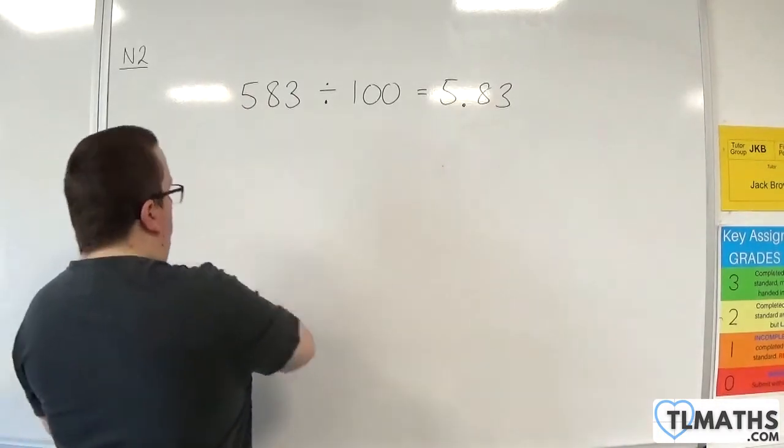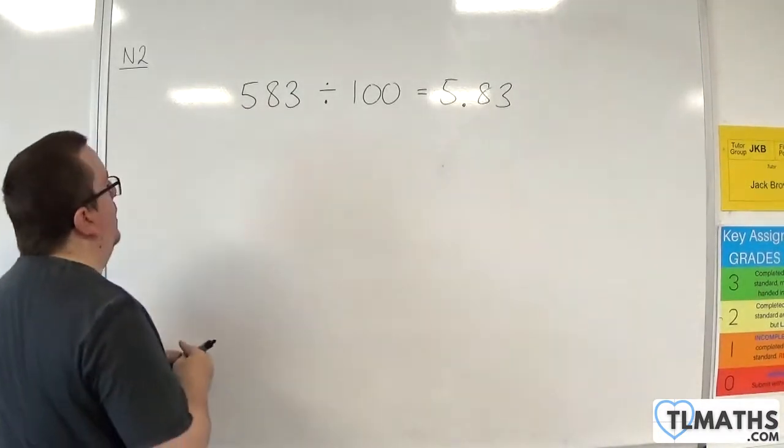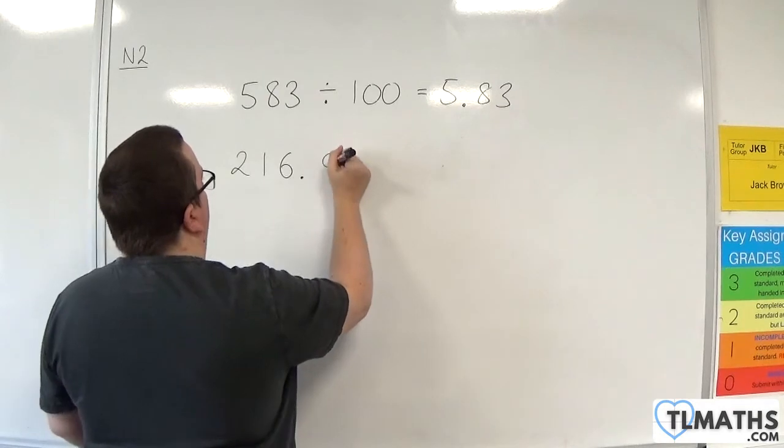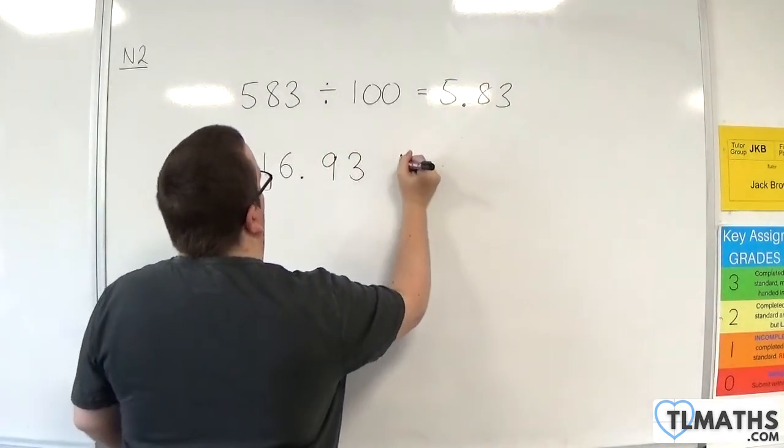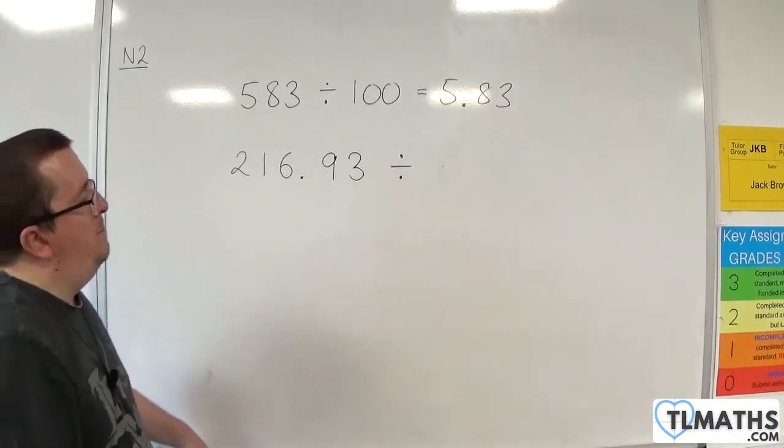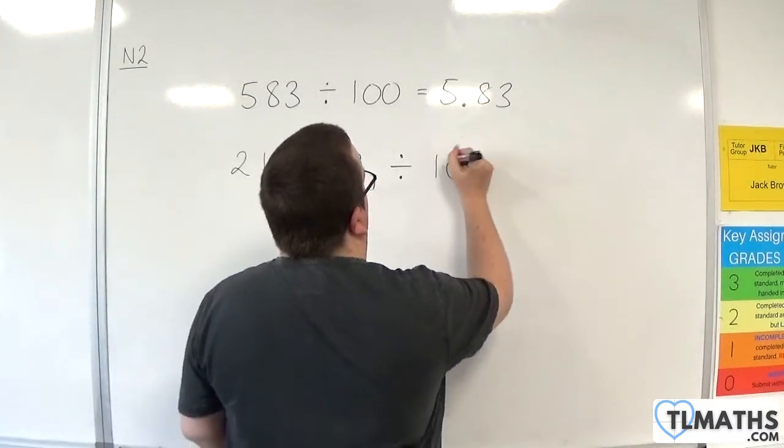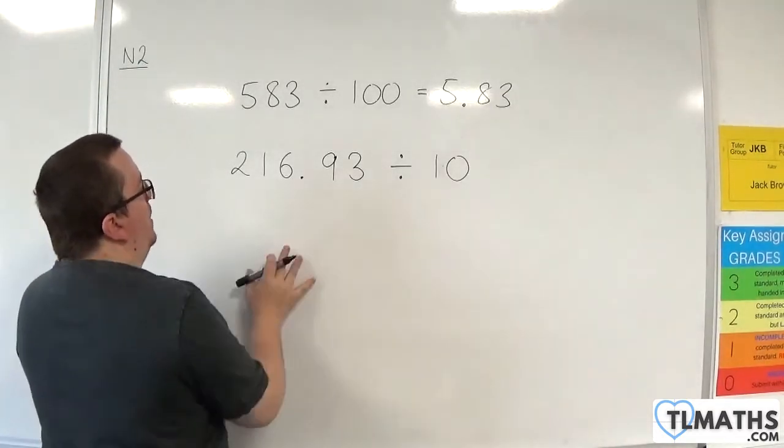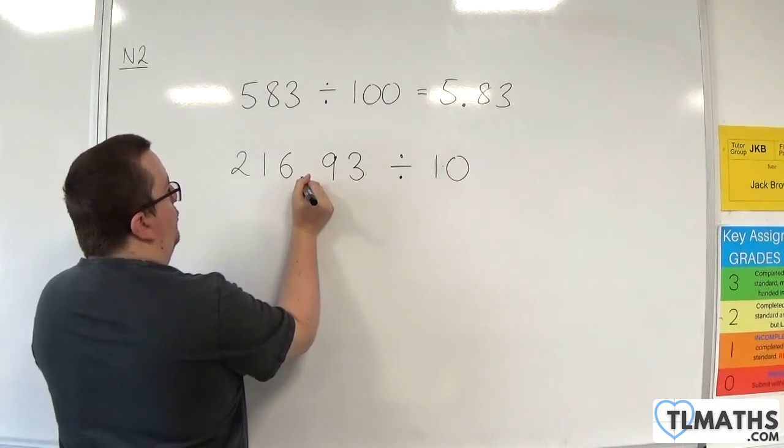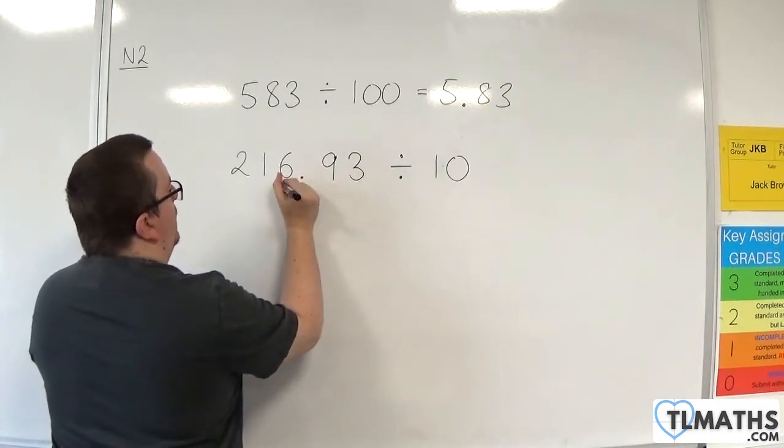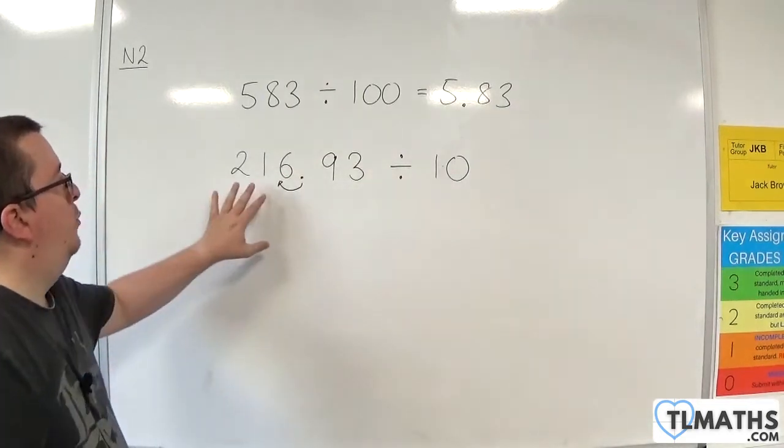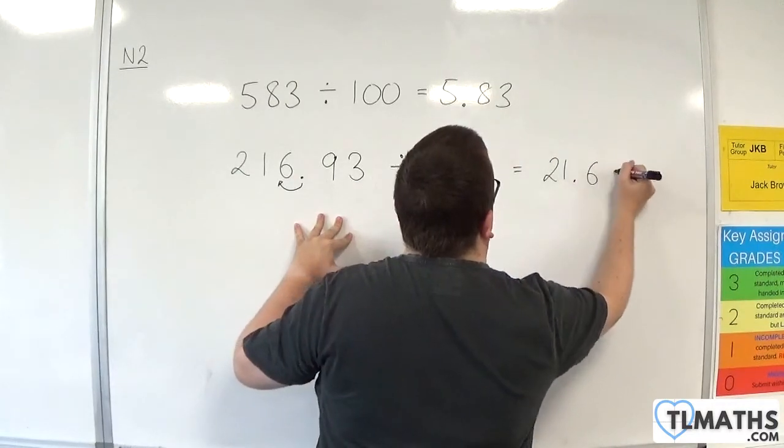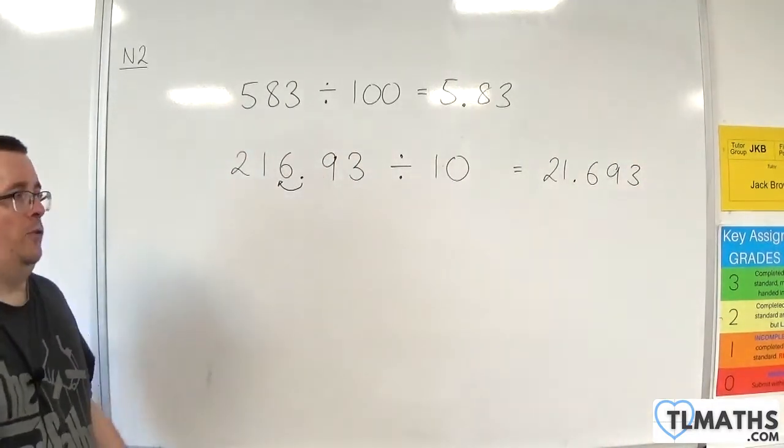Let's see another example. Let's say I've got 216.93, and I want to divide that by, let's just do 10. Now, if I want to divide by 10, it's just going to move that decimal point. It's already there, so I don't need to add anything in. It's going to move it one step to the left, and so I would end up with 21.693. So it's pretty straightforward.